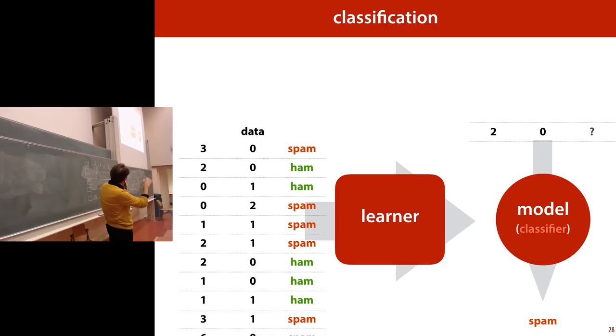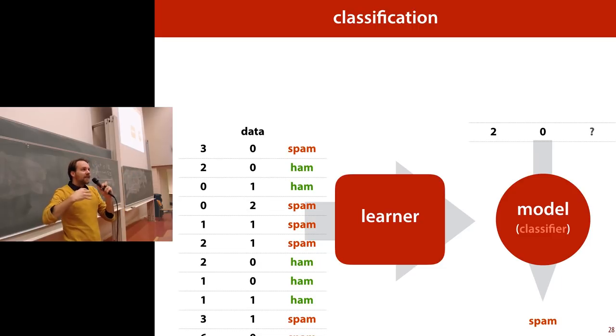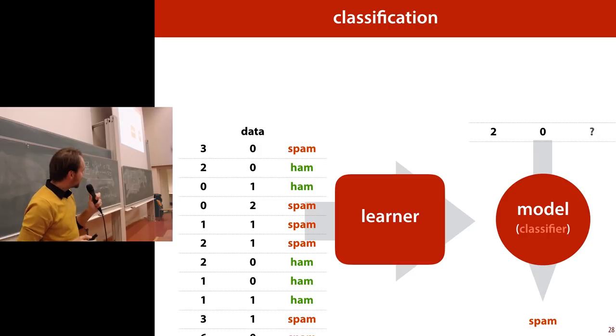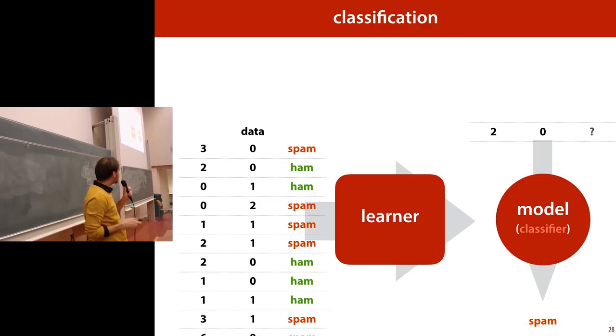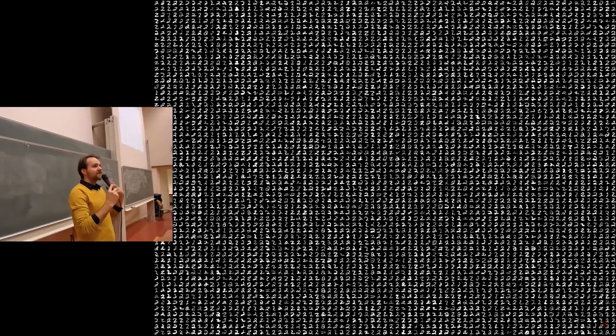If you translate your problem to this abstract problem by creating this kind of dataset, there's a load of classification algorithms you can apply. We'll look at three. Let's start with optical character recognition — basically reading handwritten text — and to make it simple, handwritten digits. Can we make a computer that recognizes handwritten digits? We have to find a dataset of handwritten digits and classify them into 10 classes: digit 0, 1, 2, 3, etc. There happens to be such a dataset available, called MNIST, with lots and lots of digit images.